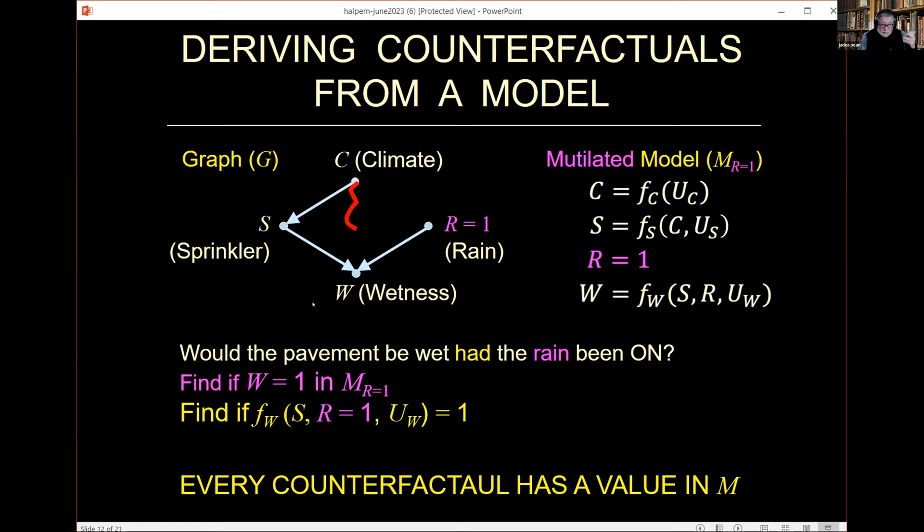And of course, I can do all kinds of counterfactuals. What if had the rain been on or sprinkler been off? What if I know that the pavement is wet? What can I say about the rain had the climate been different? With hypothetical instruments, I can create crazy worlds. The counterfactual space of counterfactual expressions is extremely large. But they all can be computed. No matter how complex, I can assign a value in M, and I can assign the probability once I assign probability to the U factors. This is the background.